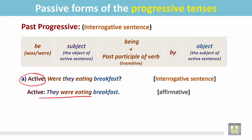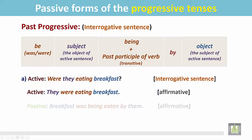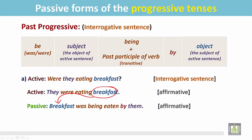In this sentence, they were eating — eating what? We find the object of the verb eating: breakfast. In the passive sentence, the object becomes the subject. Breakfast is a singular noun, so use was. Then for the progressive, use being. And the past participle form of this verb is eaten.